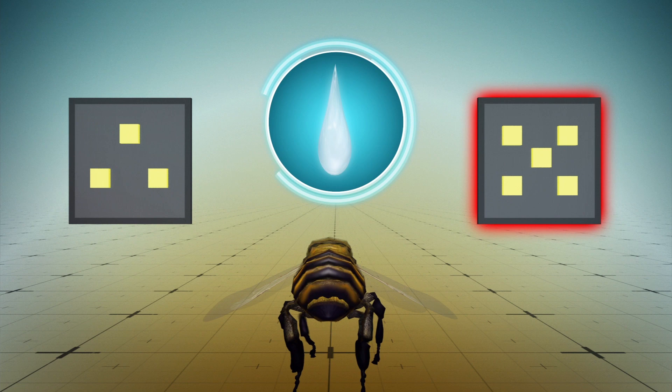After 100 trials that took 4 to 7 hours, the bees had learned a basic concept of addition and subtraction.